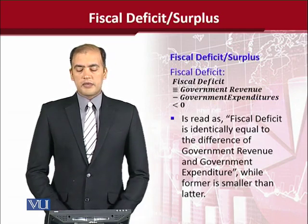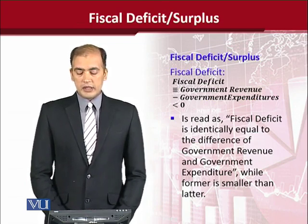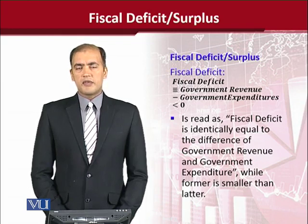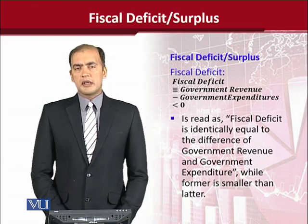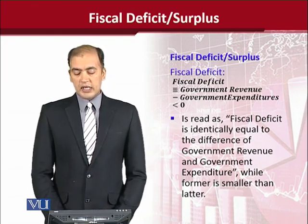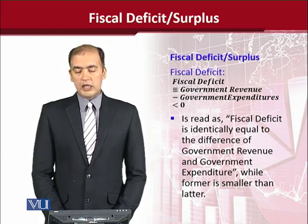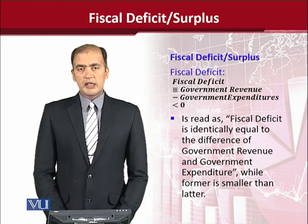Fiscal Deficit is an undesirable situation and it is the difference of Government Revenues and Government Expenditures. If the difference is less than 0, it will cause a Fiscal Deficit. Here we use identities to explain this situation and we say that the Fiscal Deficit is identically equal to the difference of Government Revenue and Government Expenditure, while the former is smaller than the latter.